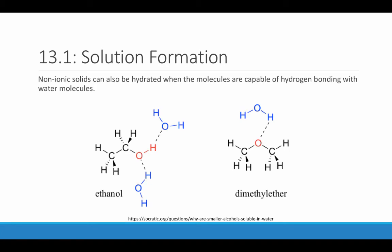Similarly, non-ionic solids can be hydrated when molecules are capable of hydrogen bonding with water molecules. For example, ethanol contains an OH group with two sites where hydrogen bonding can occur. The oxygen can hydrogen bond with a hydrogen from a neighboring water molecule, whereas the hydrogen can form a hydrogen bond with the oxygen of a water molecule, allowing ethanol to be surrounded by water molecules. Dimethyl ether, on the other hand, has one site for hydrogen bonding — this oxygen can form a hydrogen bond with the hydrogen end of a water molecule. This allows these molecular solids to have some solubility in water.